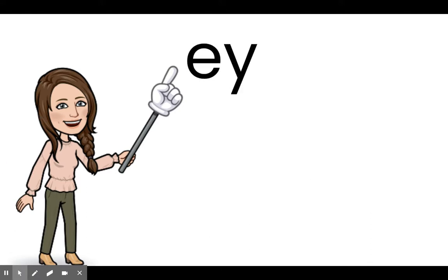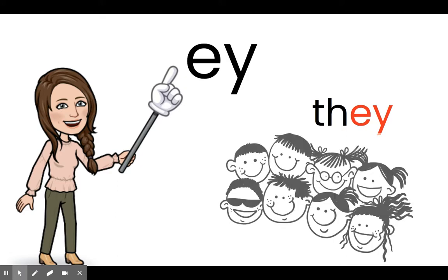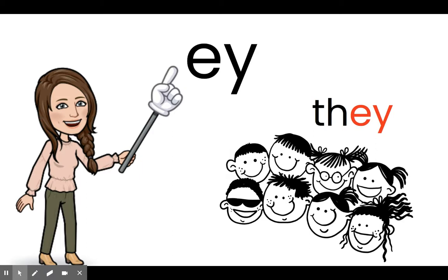E-Y is another way we can make the long A sound. Again, this is very common at the end of a word, like the word they. They are my friends. They. E-Y: another pattern for A.